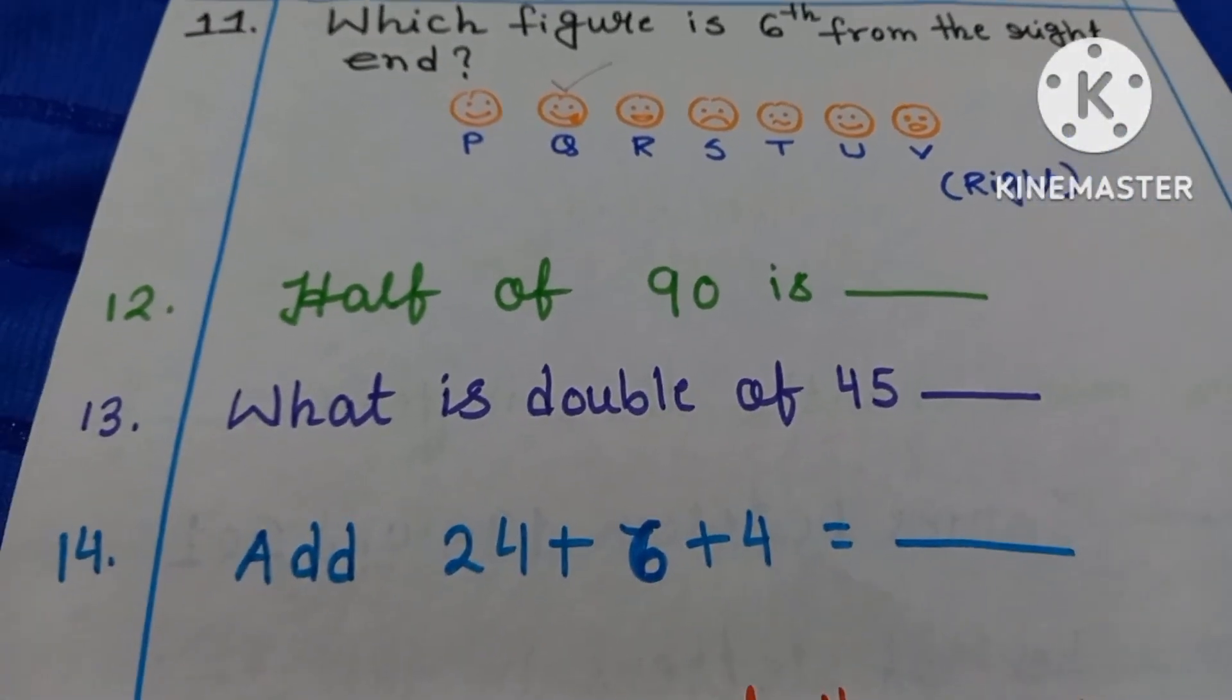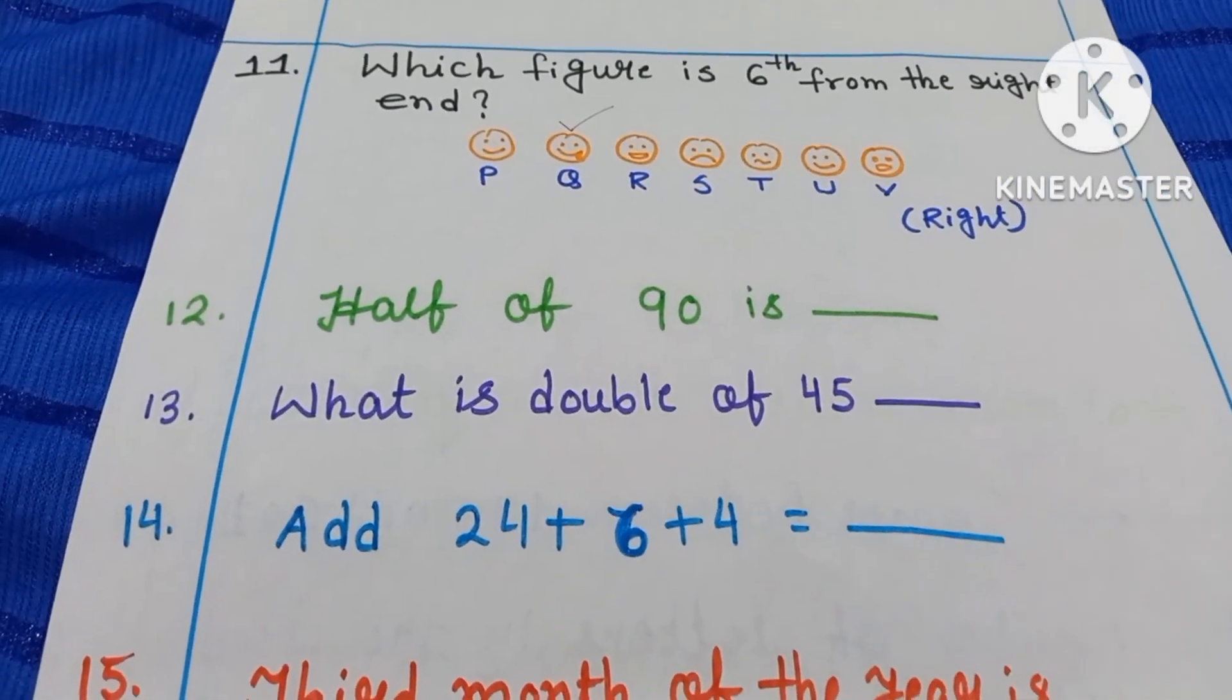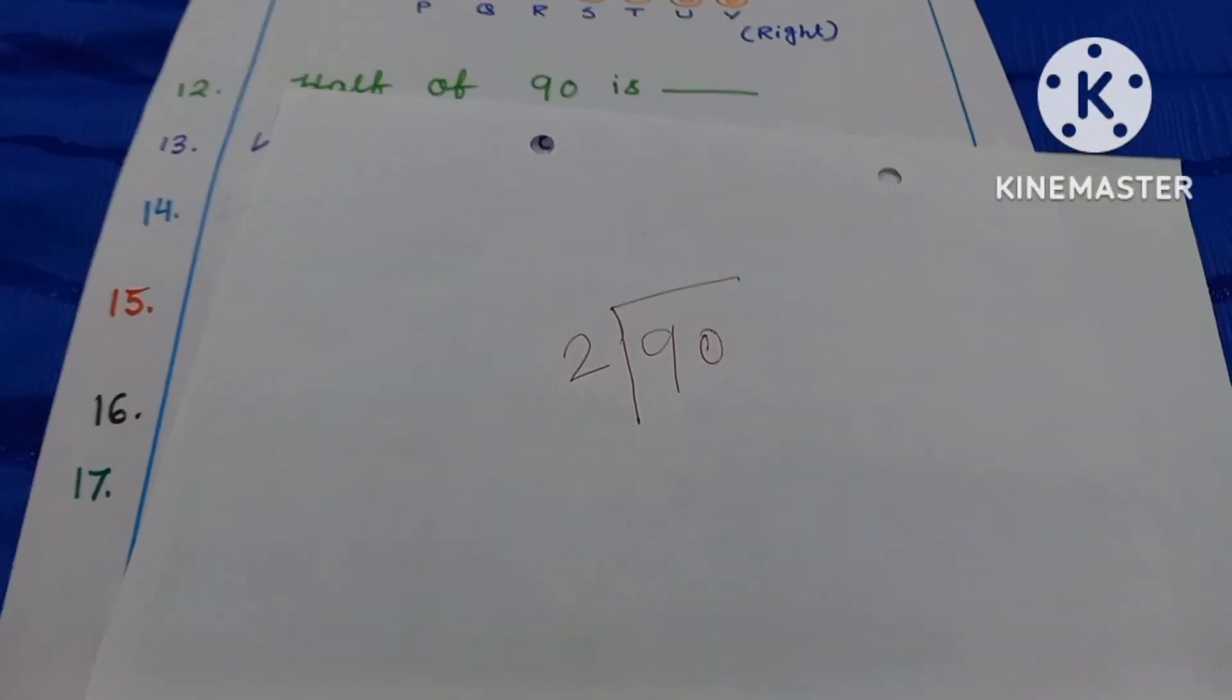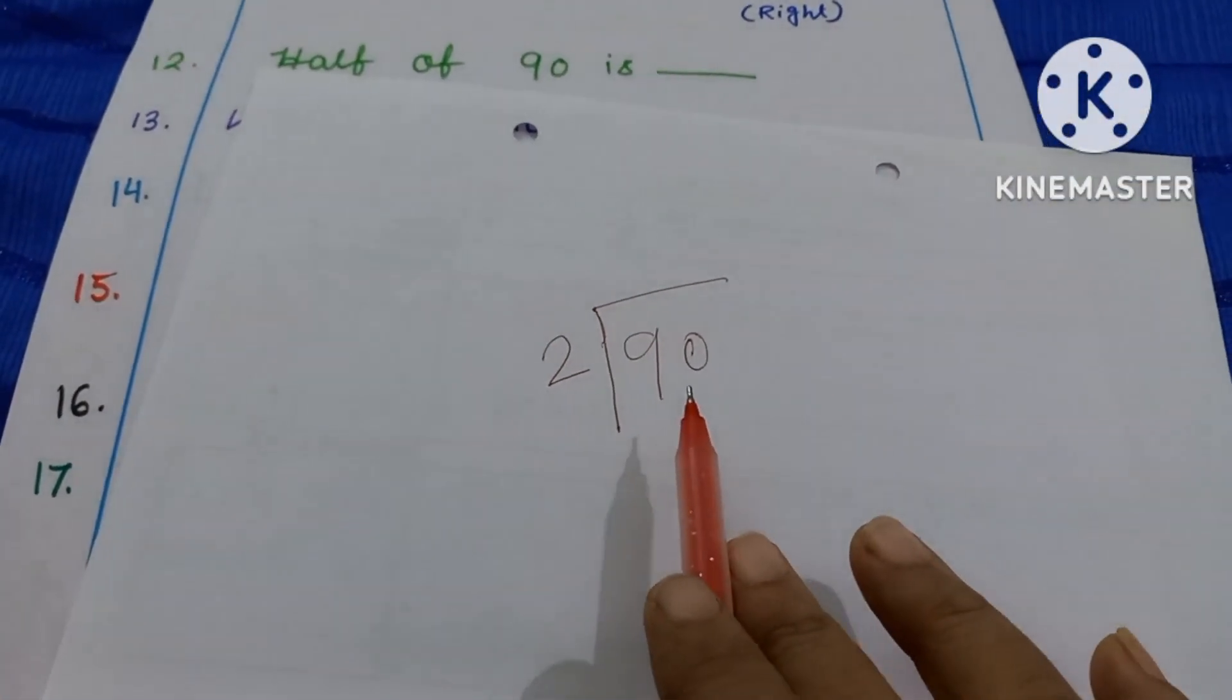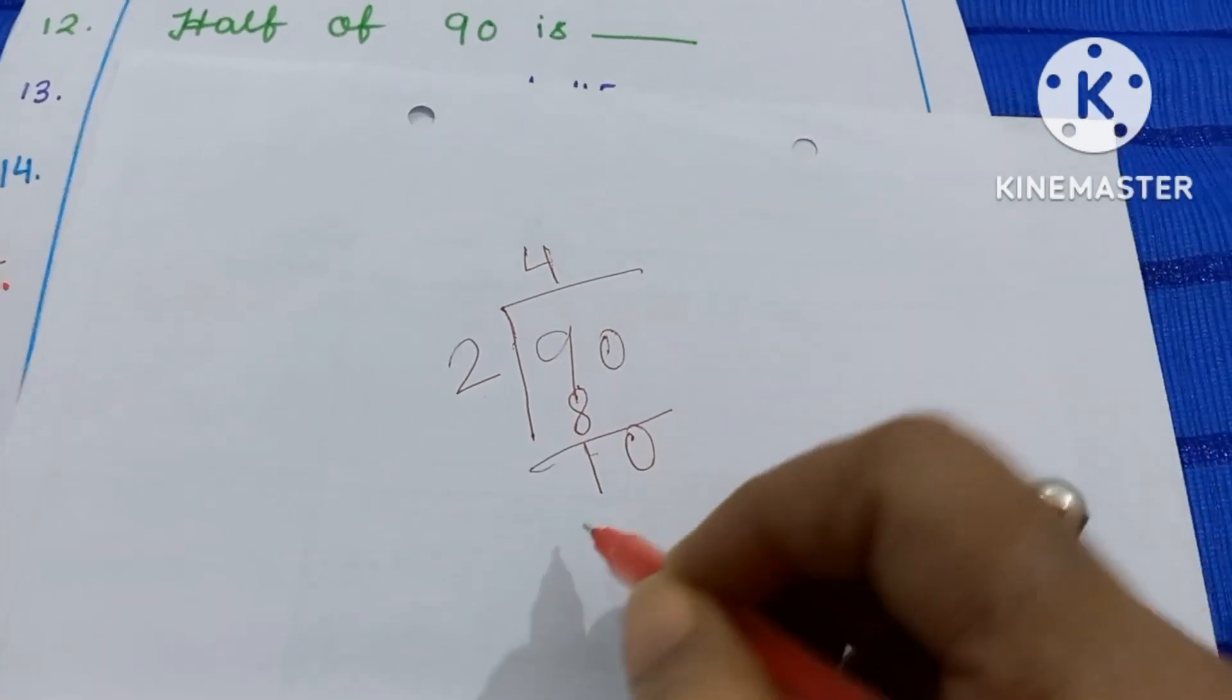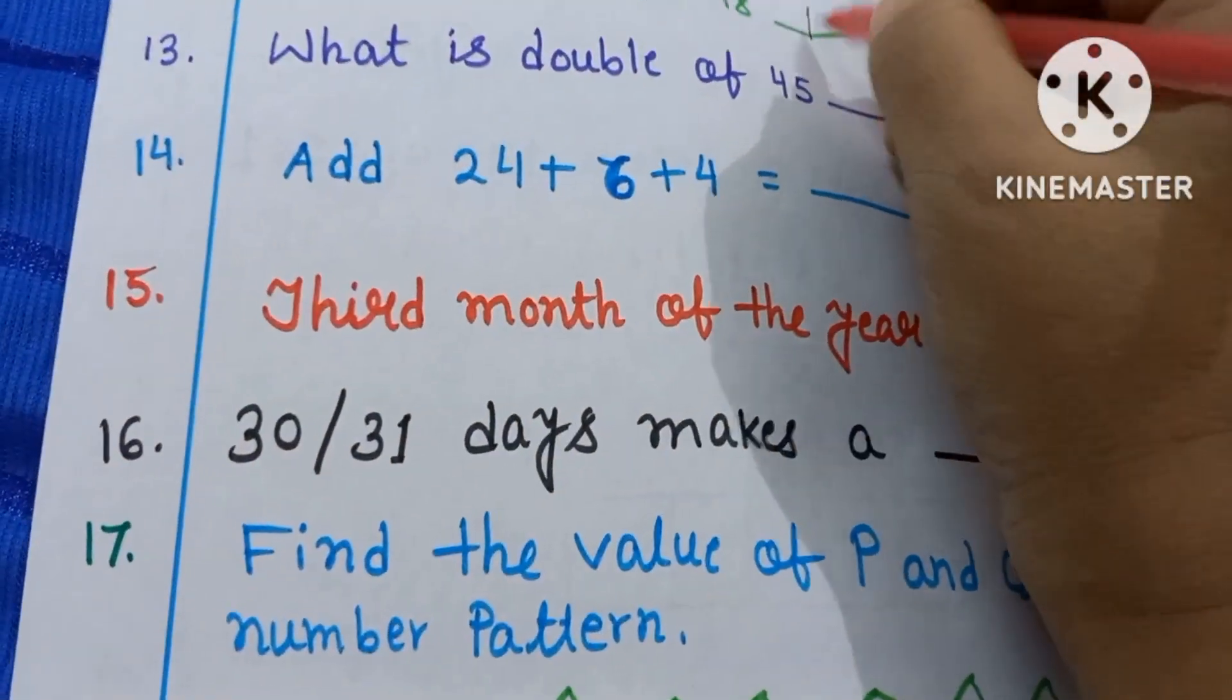Question number 12. Half of 90 is? Half means do you know? Yes. So how will you do it? Yes, you have to do division. So that time you can use this type of rough paper. I have taken one rough paper and I have written here 90. With the help of 2, I will divide it. 2 4s are 8. That means your answer will be 45. So here you can write 45.